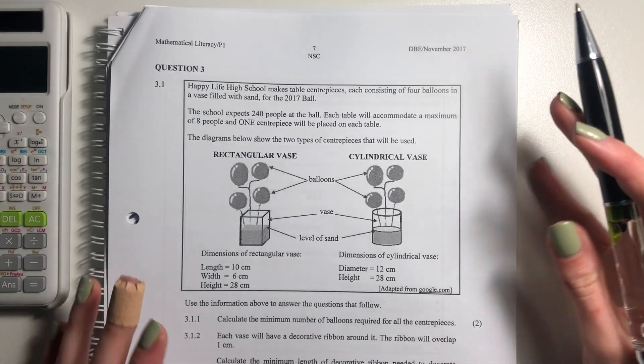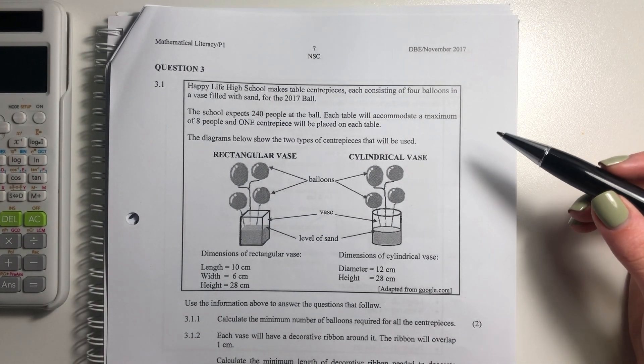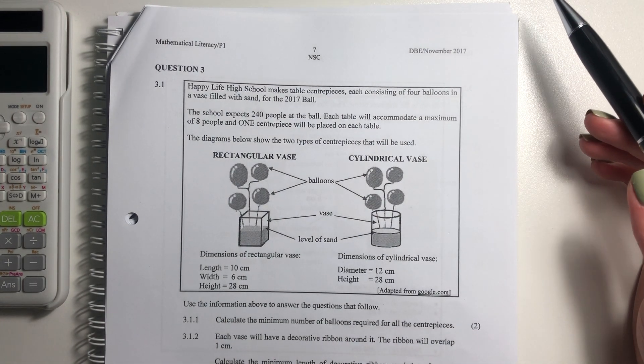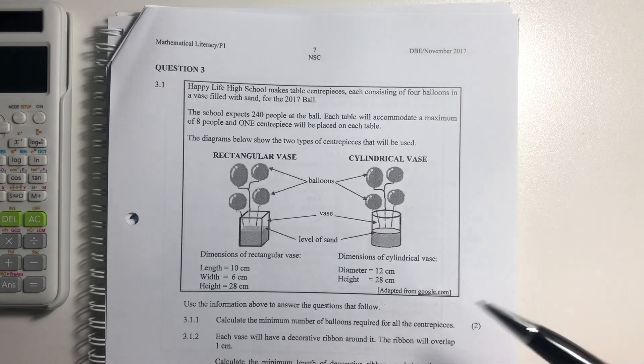So there's one that's rectangular and one that's cylindrical, and they've given us a number of different measurements and dimensions. So we're probably going to have to use that. Use the information above to answer the questions that follow. Calculate the minimum number of balloons required for all the centerpieces.